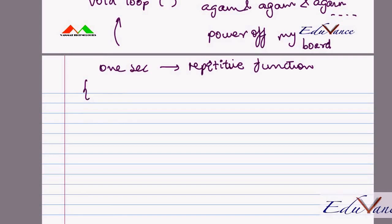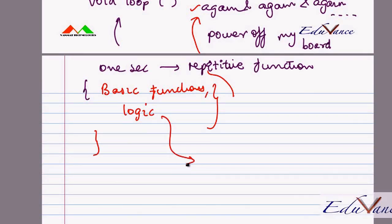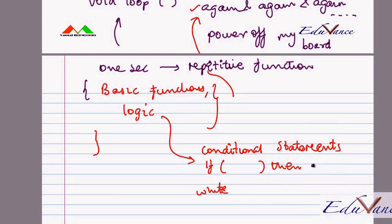In my loop, I would specify some basic functions, some logic that I would like to do again and again. This logic can be implemented with some conditional statements which we will see as part of this course. Conditional statements like if, while. They are quite similar to English. If I would like to do this, then you can do this. While this is happening, you please do this. These are conditional statements which we will look at as part of this course.